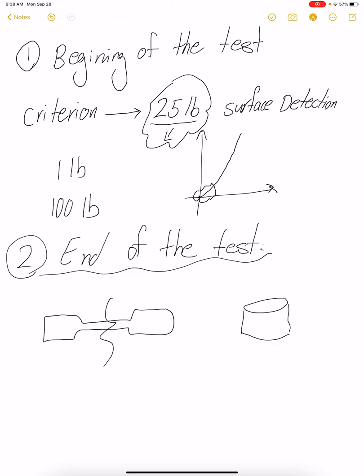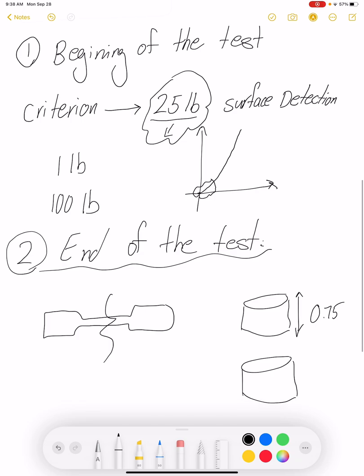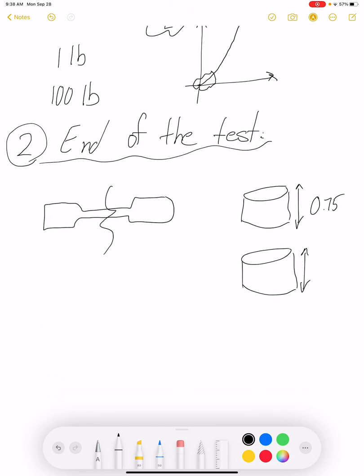How do we know when to stop the test? The easiest way is to assign a displacement criterion, saying that if the height is 0.75 inches, whenever the displacement reaches half of the height, 0.375 inches, then we stop the test.